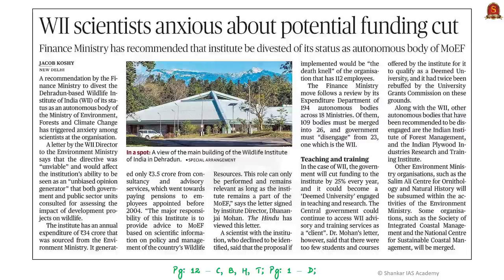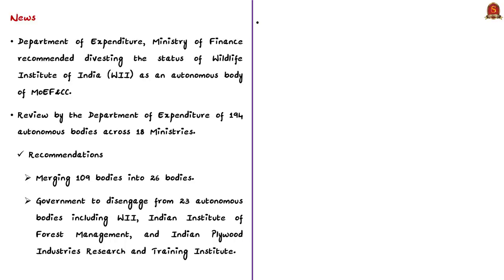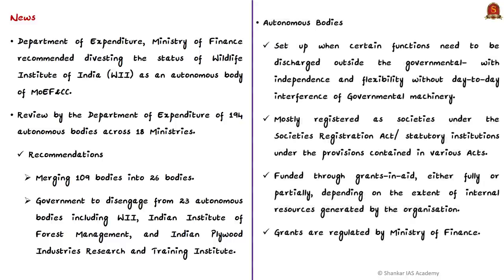This news article mentions that the Department of Expenditure under the Finance Ministry has recommended divesting or removing the autonomous status of the Wildlife Institute of India. This is a result of the department's review of 194 autonomous bodies across 18 ministries. Autonomous bodies are set up whenever certain functions need to be discharged outside the governmental setup with independence and flexibility, and without day-to-day governmental interference. In most cases, they are registered as societies under the Societies Registration Act, and in some cases as statutory bodies.